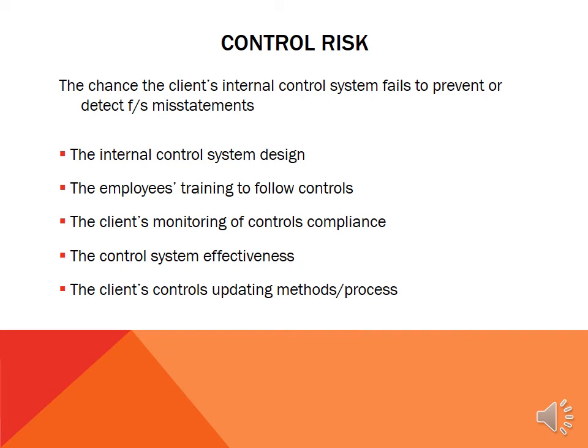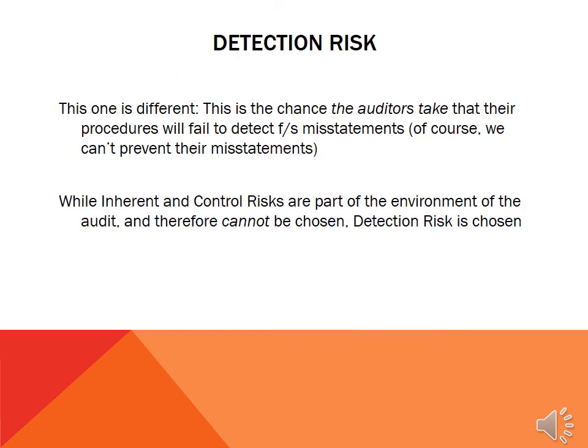Detection risk is the third element of audit risk. Inherent risk and control risk are not controllable by the auditor; the auditor evaluates client inherent risk and client internal control risk. Detection risk is different — it's set by the auditors. It's the chance the auditors take that their procedures fail to detect financial statement misstatements. We can't prevent client misstatements, but we can detect them with our audit.